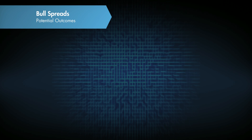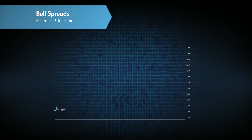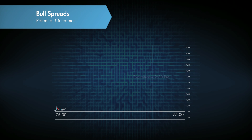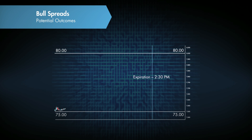Let's set this up on a chart. Here's a chart of the underlying crude oil price. We have our floor of 75, and as we can see, the underlying market on the left is trading right about the floor. We have our expiration time of 2:30 p.m. This is an option, so we're bound by an expiration time. And of course, our ceiling is 80.